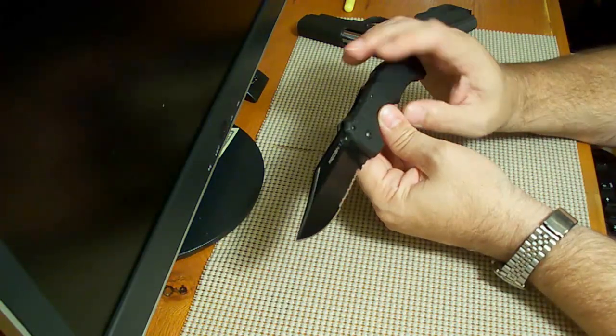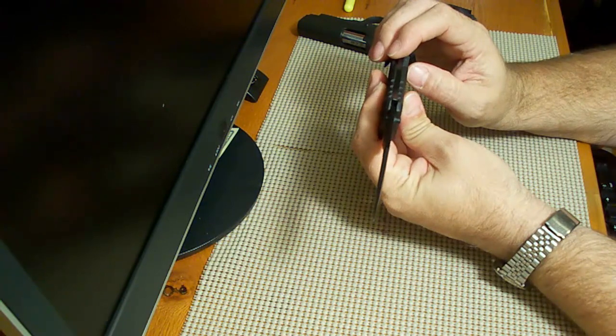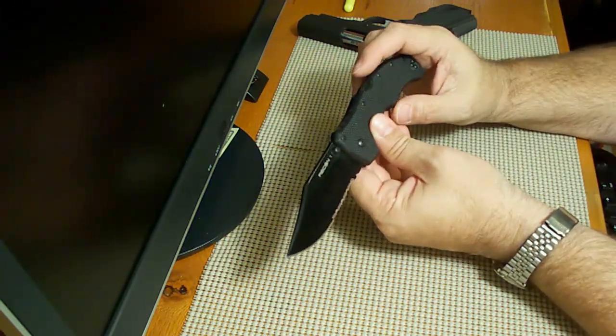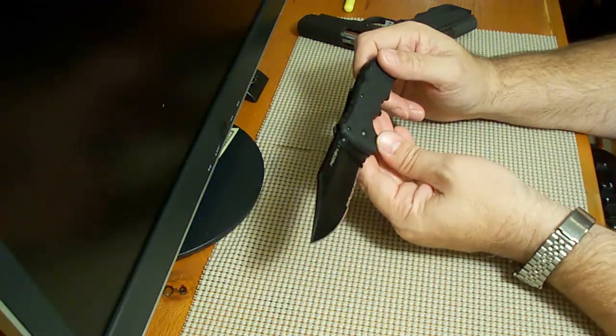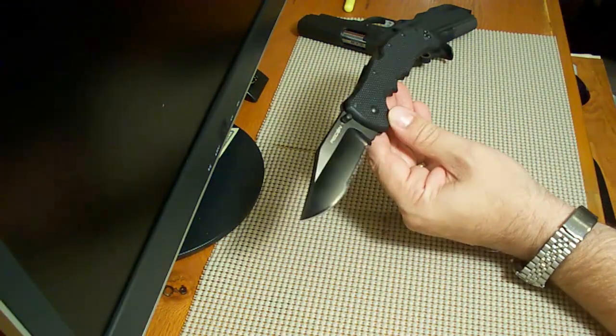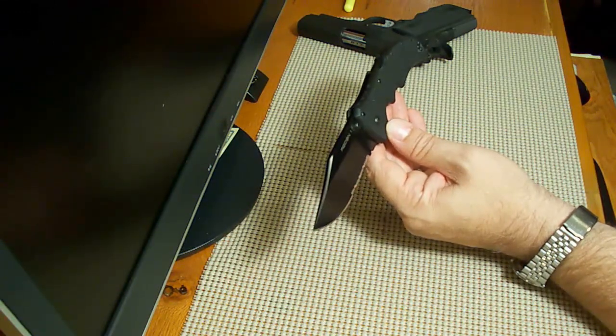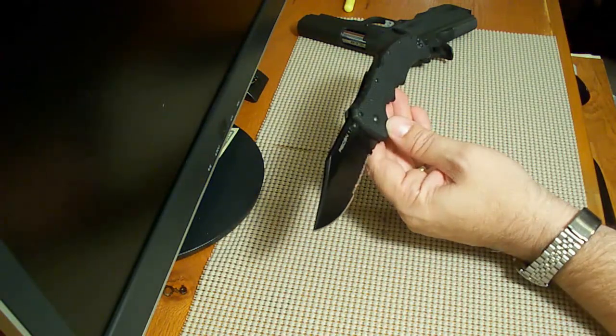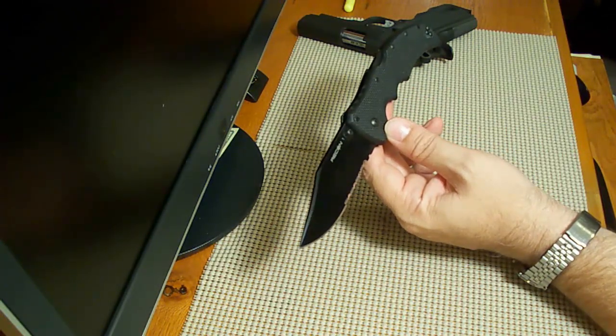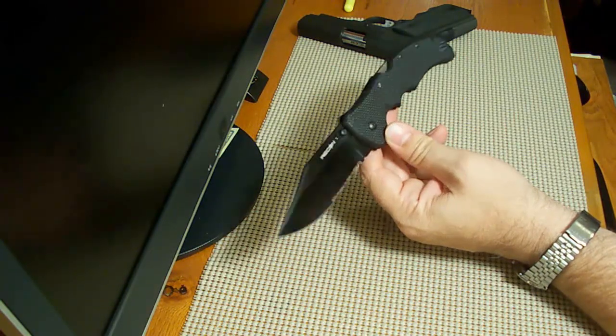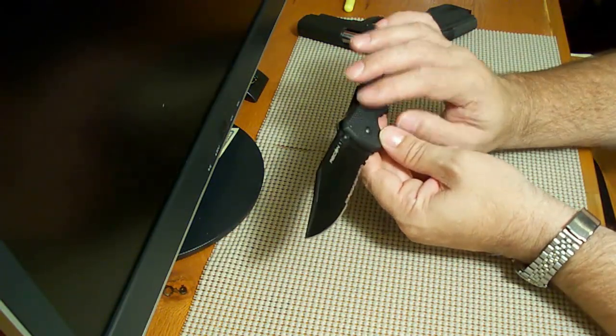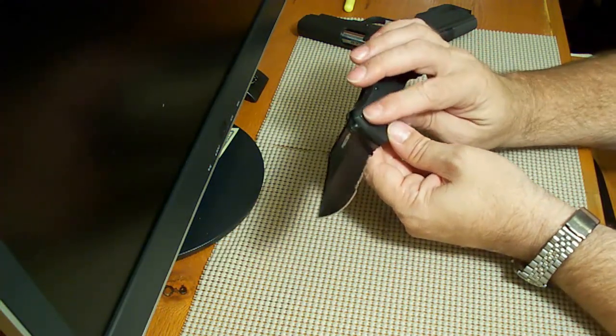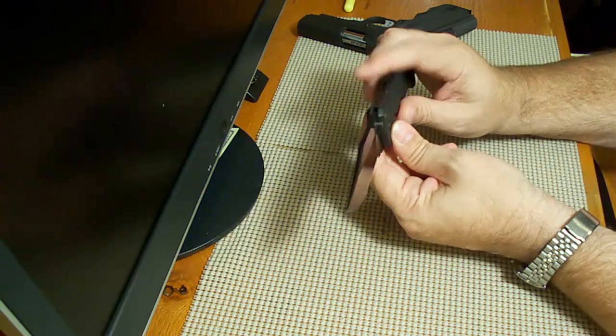The thing about this knife is it does have that triad locking system which incorporates a pin as well as part of the rocker back here. This thing will hold, I think they say it's rated at up to 400 pounds on this particular knife. I know the Espada, the extra large Espada, there's actually a video on Cold Steel's website that shows them hanging 600 pounds off of it.